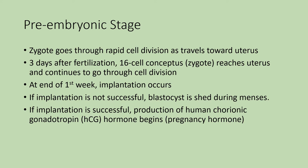The cell mass continues dividing and finally reaches the uterus, where it floats around. Usually by the end of the first week, implantation occurs. If implantation is not successful, the blastocyst will be shed during menses — this happens quite frequently, with some estimates as high as 65% of the time. A woman would not even know she was technically pregnant at this point. If implantation is successful, you start to see the production of human chorionic gonadotropin, or HCG.